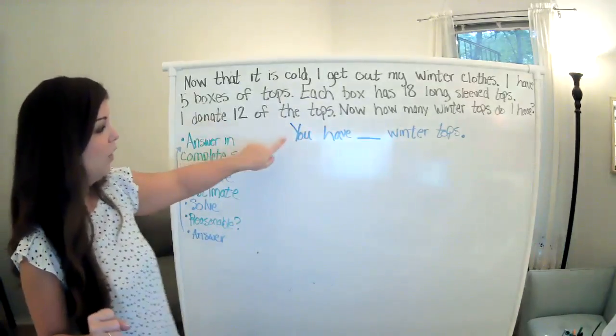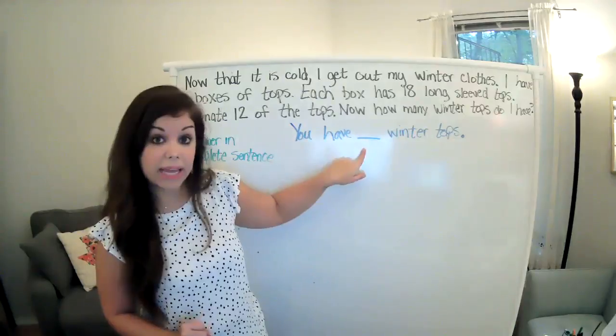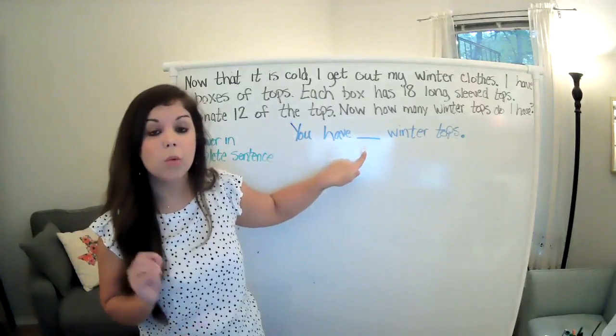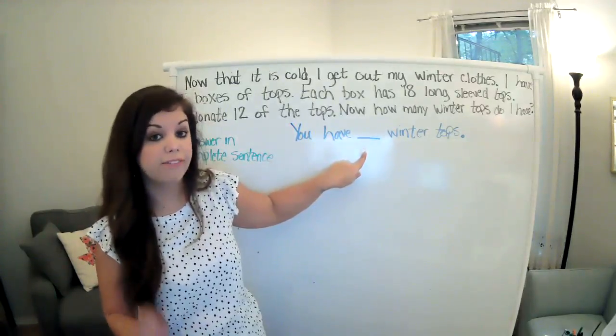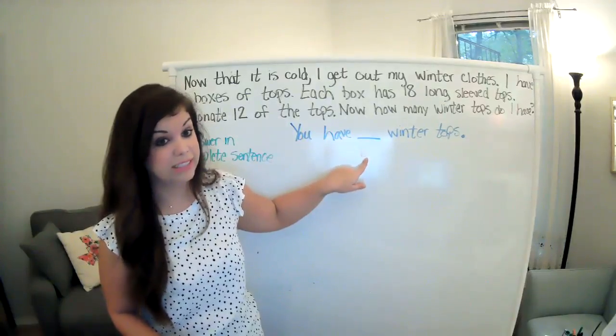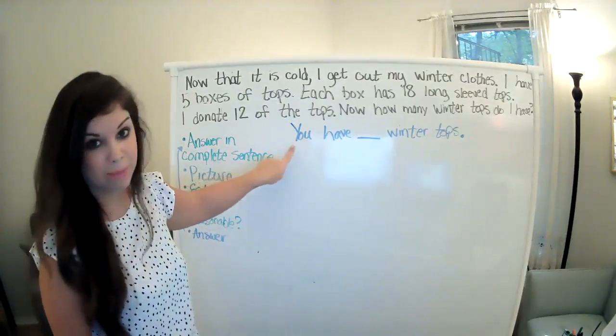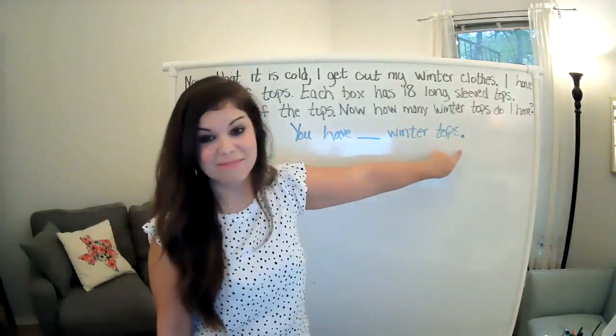But here's how. You write it as a blank. The reason why is because it will help you remember what it is that you are trying to figure out. It's also good practice for writing complete sentences. You'll notice my complete sentence has two special things: a capital letter and an end mark.